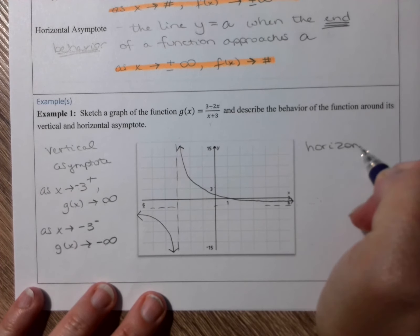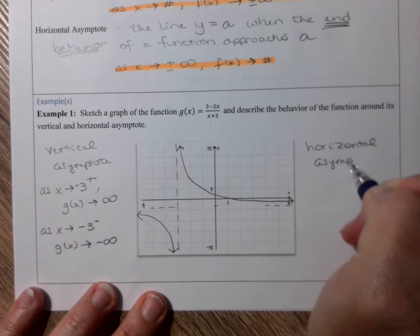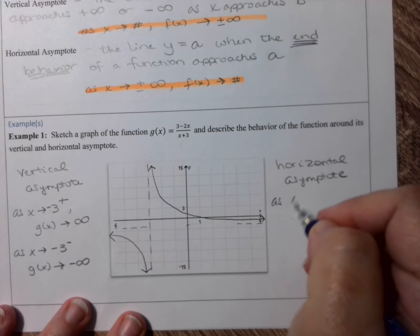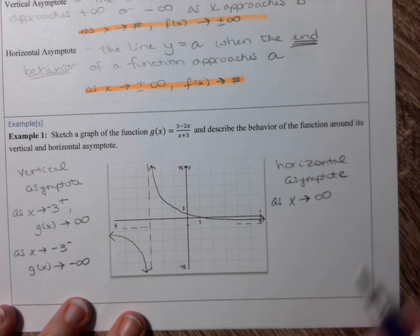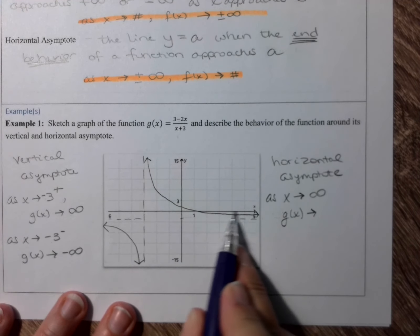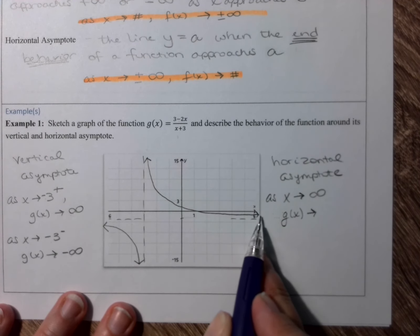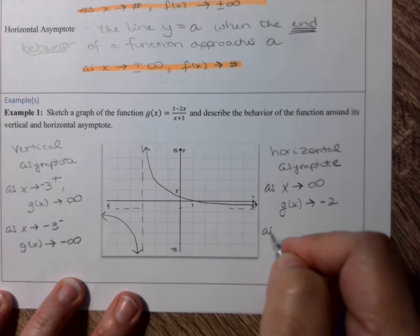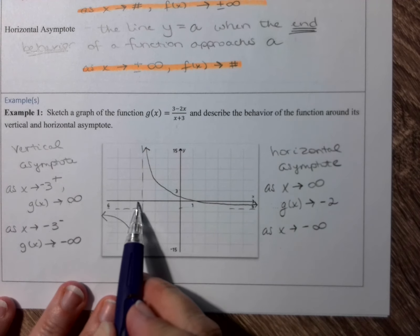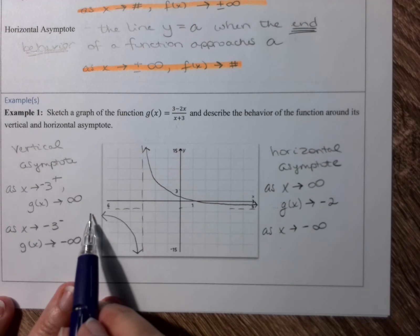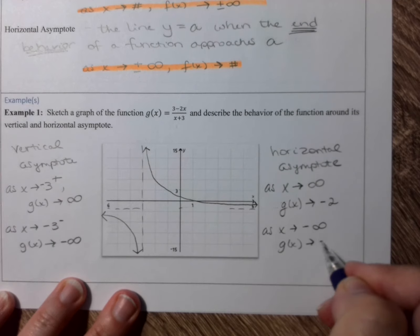Now let's talk about the horizontal asymptote for example 1. Remember, with a horizontal asymptote, x is going to positive or negative infinity and the function is approaching a number — we're talking about end behavior. As x goes to positive infinity, our function g of x is getting closer and closer to negative 2. And as x approaches negative infinity, this end of the function is also approaching negative 2.